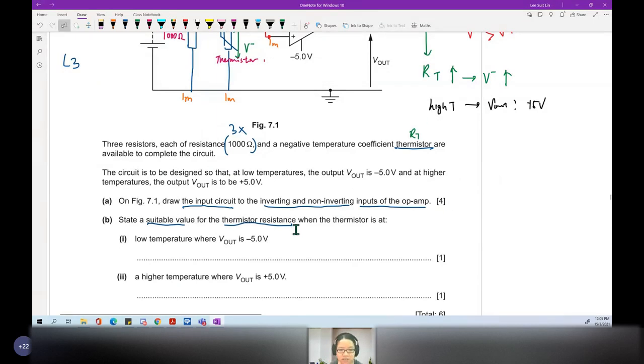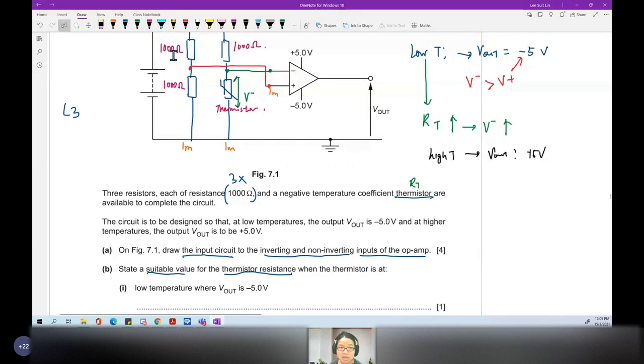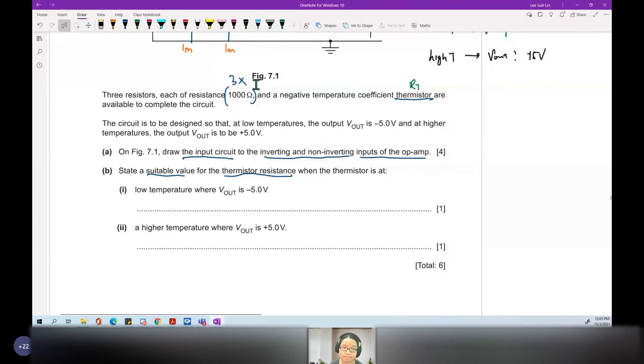Low temperature and the V out is negative means I need the resistance to be bigger. I just need it to be bigger than 1000. Can I write greater than 1000? What do you think? No. The answer is no. State a value. State a value. Give me a number that is greater than 1000. Your favorite number. You can put 8888 for Chinese New Year. Anything.